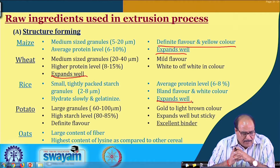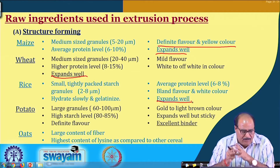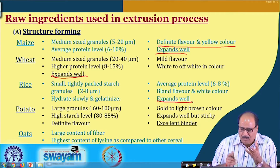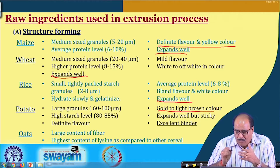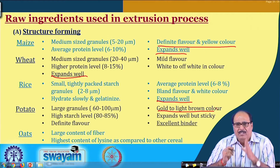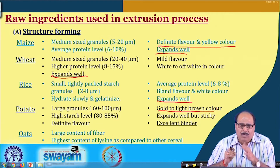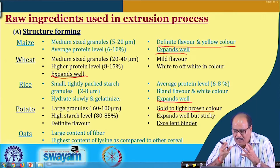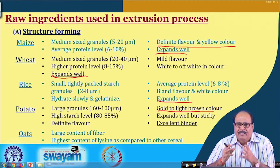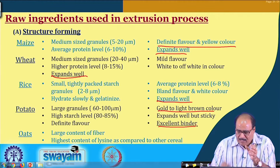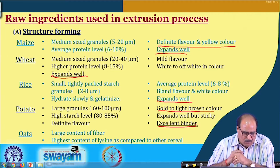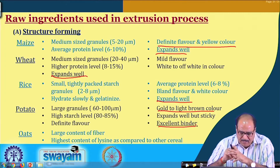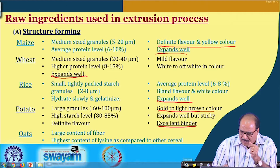Potato has large granules, high starch level, a definite flavour, and gold to light brown colour. Its starch characteristics result in good expansion, but the material becomes sticky, so it is an excellent binder and can be used for binding purposes. Oats contain large amounts of fibre and the highest content of lysine as compared to other cereals.